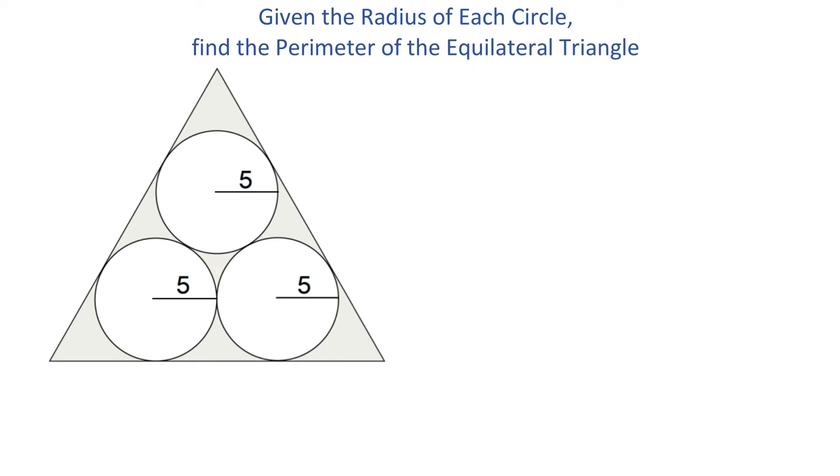From the centers of each of these two circles, we will draw two perpendiculars down to the bottom side of this triangle. Then, this line segment from this point to this point has length 10 units because this is the sum of the radii of the two circles.